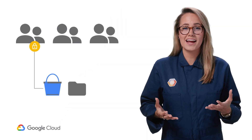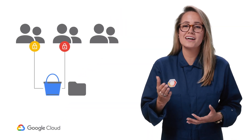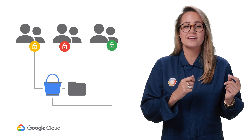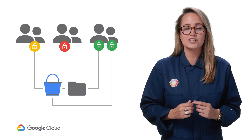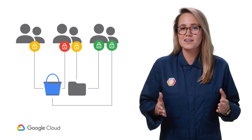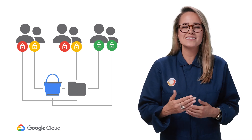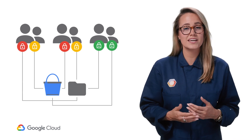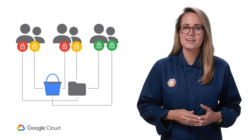ACLs, on the other hand, let you grant access based on individual objects within a bucket, although it might take a bit more setup to get it working right. If that sounds like an area where you want to learn more — and you really should — check the links in the description.